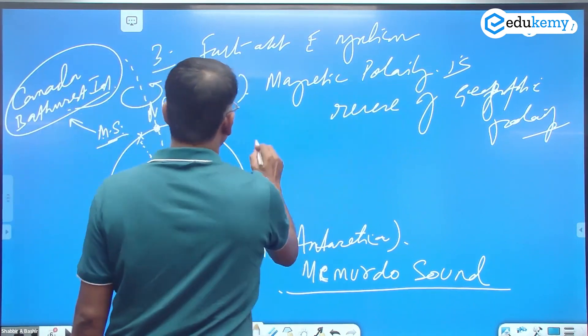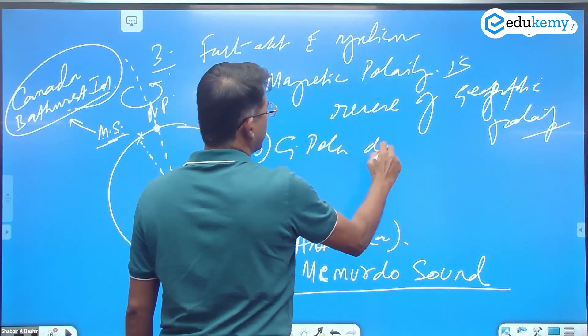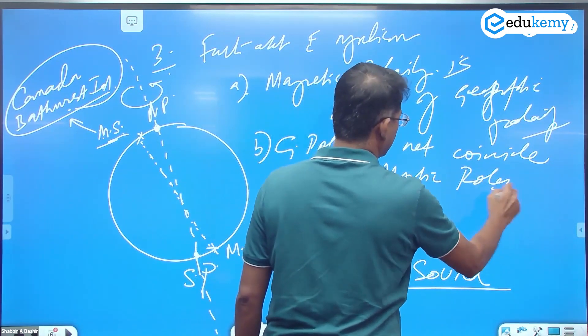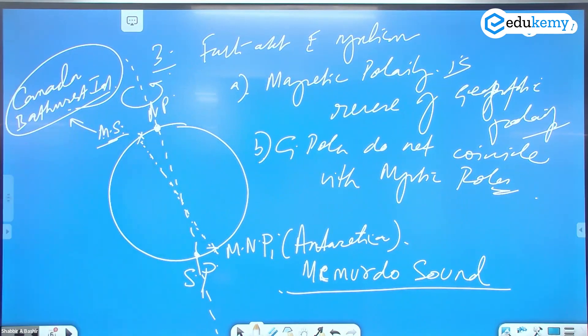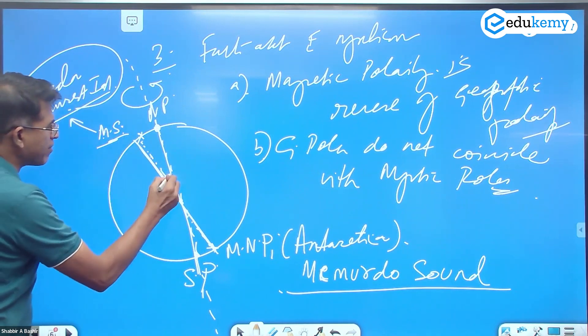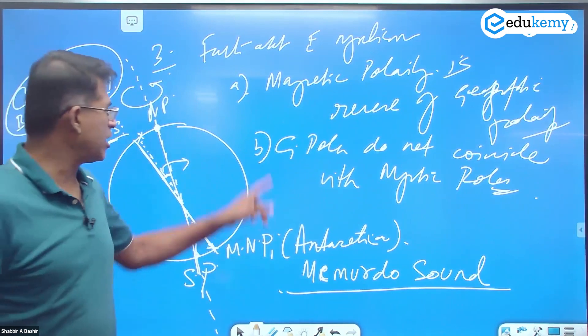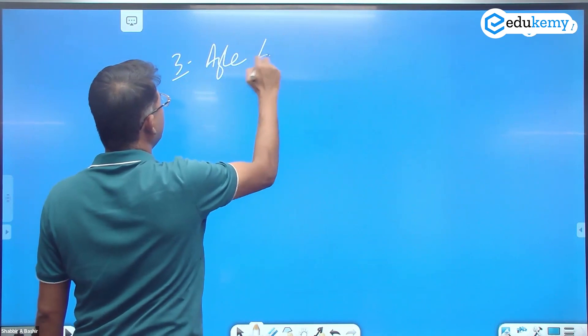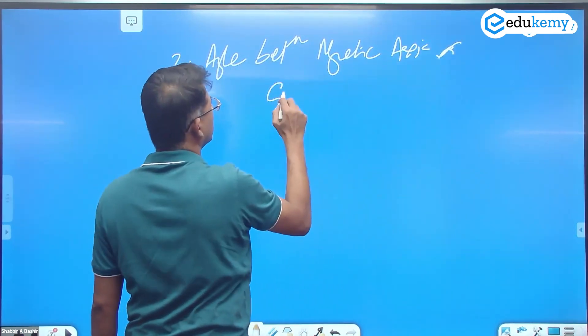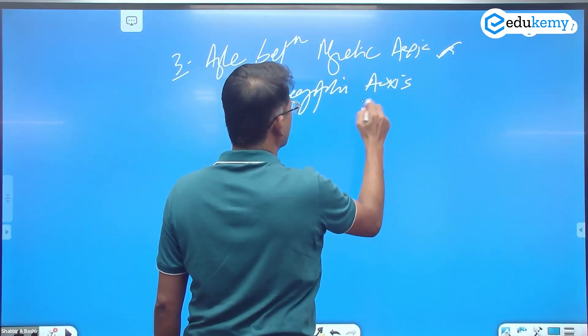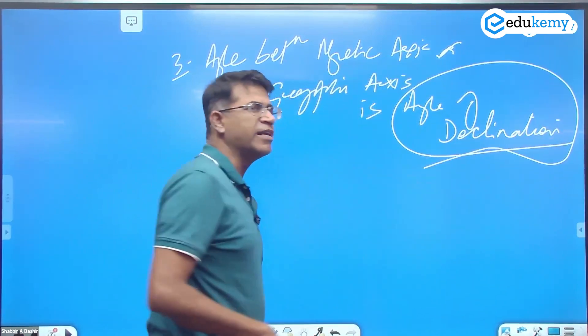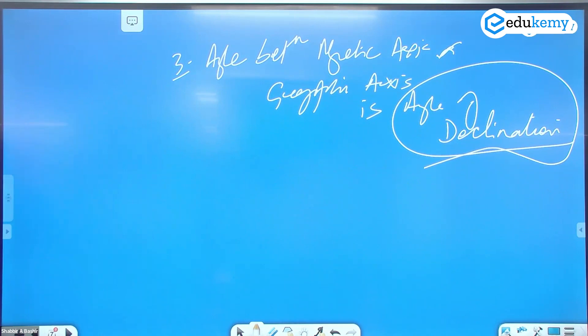It is reversed, and the geographic poles do not coincide with the magnetic poles. This is the geographical axis and this is the magnetic axis. They will have some angle between them. The angle between the magnetic axis and the geographical axis is called the angle of declination.